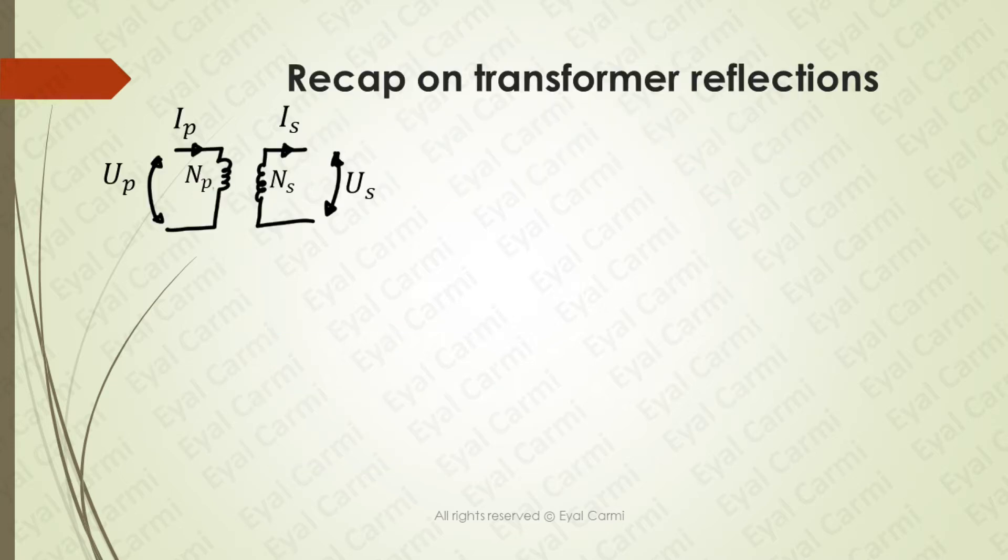Let's recap some of the transformation equations. Here you have an ideal transformer. If you want to reflect the primary voltage to the secondary side, then take the primary voltage and multiply it by N secondary divided by N primary. If you want to reflect the primary current to the secondary side, then take the primary current and multiply by N primary divided by N secondary. Note the ratio N primary divided by N secondary is the inverse to the one given in the voltage reflection.